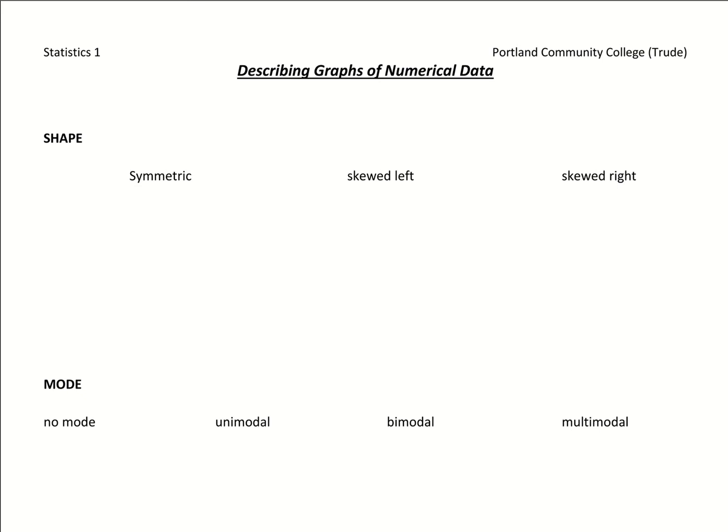Once we finish making our graph, what we want to be able to do is describe it. Describe the shape, describe the trends, and describe any unusual features that are coming through. So what we'll do with these cases is think about the type of histogram that would be made for each of these cases.